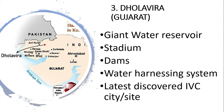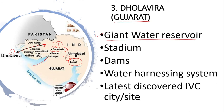The next important site is Dholavira, located in present-day Gujarat. On the map, you can see Dholavira and Lothal as Indus Valley sites in Gujarat. Dholavira is known for its giant water reservoir, stadium, dams, and well-developed water harnessing systems. It is also the most recently discovered Indus Valley Civilization site.